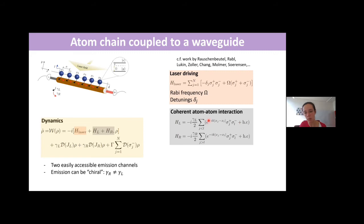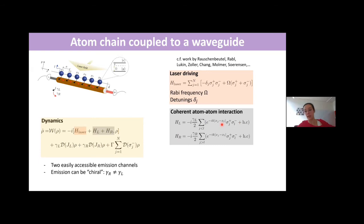What's particularly interesting about these Hamiltonians is their form: they go as e^{-ik(x_l - x_j)}, so interactions don't decay with distance — they only have a phase dependence. The strength of interaction between the first and last atom may be the same as between two neighboring atoms. These are proportional to γ_R and γ_L — the decay rates into right and left guided modes — and represent atom-atom interactions mediated by the guided modes.